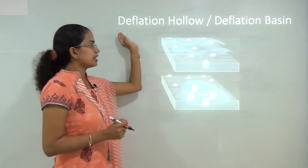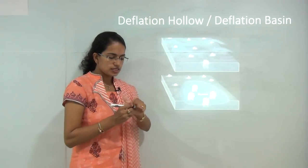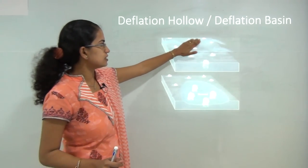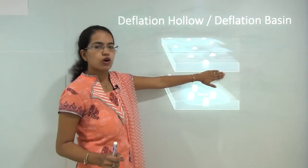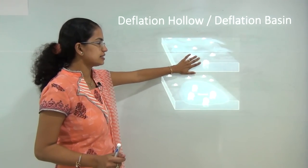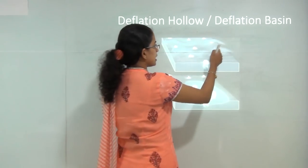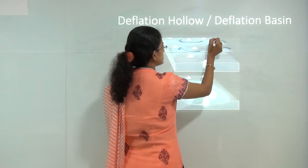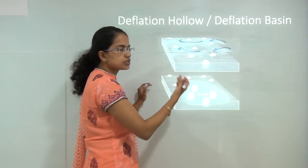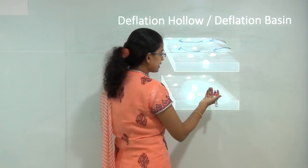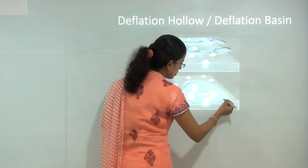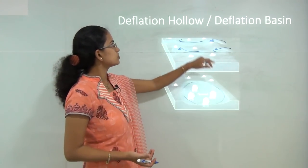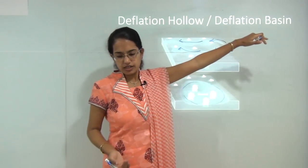The process of deflation itself suggests that with the movement of air, wind particles move out. Consider a surface before a deflation hollow was created — sand particles were present. As the wind blows, it erodes away the smaller and lighter particles, creating a kind of hollow or basin area in that region. This hollow or basin is known as a deflation hollow or deflation basin.